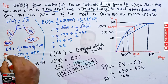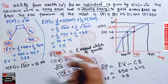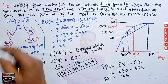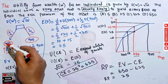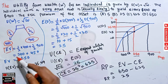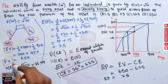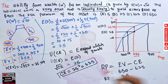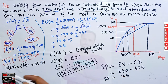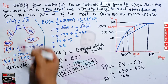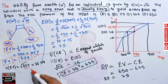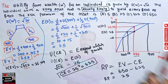First, we need to find the expected value of the gamble — the expected monetary benefit. The expected value is calculated by multiplying each outcome with its associated probability and summing them: (1/2)(400) + (1/2)(900) = 200 + 450 = 650. So the expected value of the gamble is 650. The utility of this expected value is u(650) = √650 ≈ 25.49.